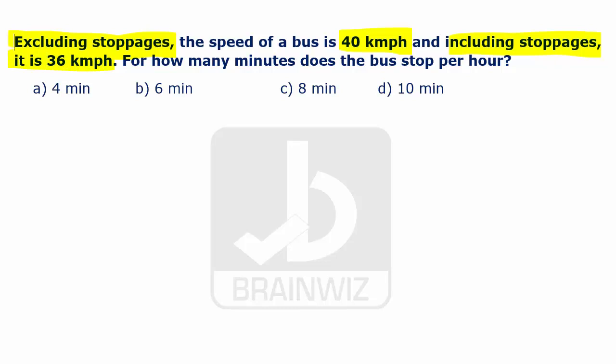We need to find out how many minutes for every one hour the bus is going to stop. Here, two types of speeds exist, one excluding stoppages, that is 40, and the one including stoppages, that is 36.